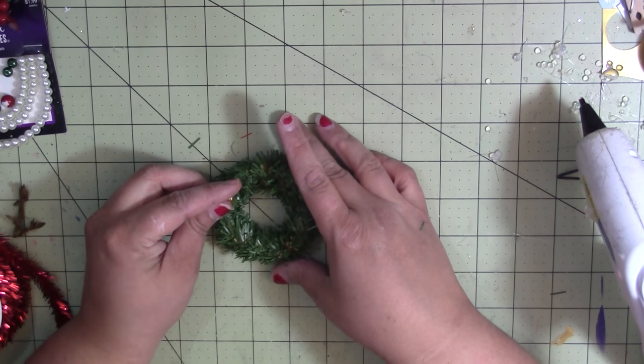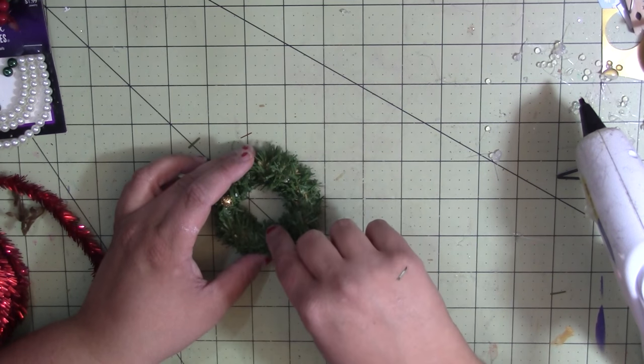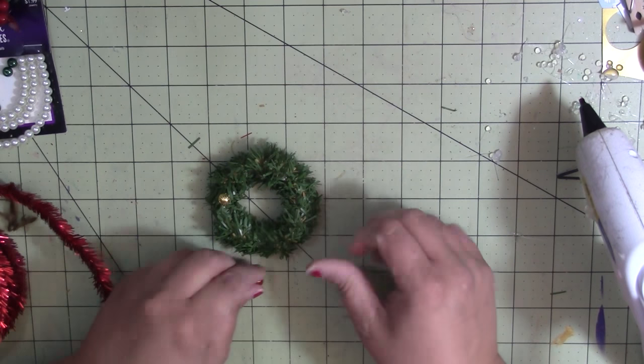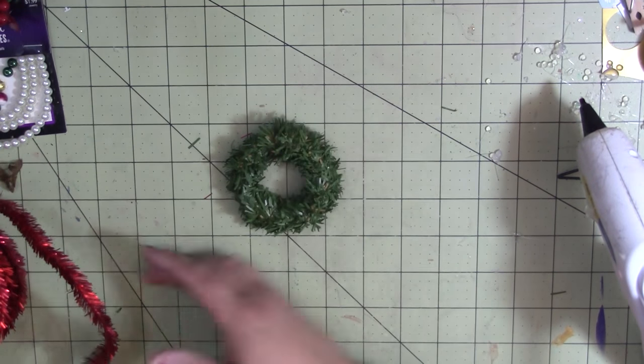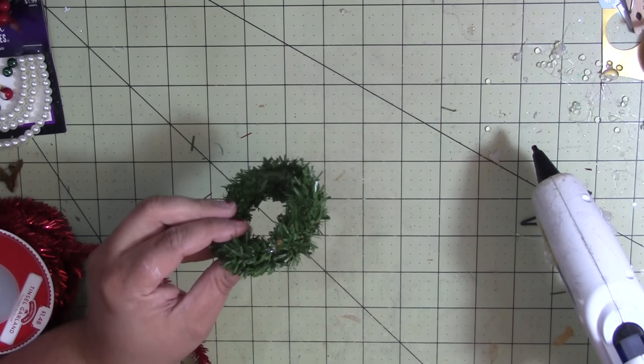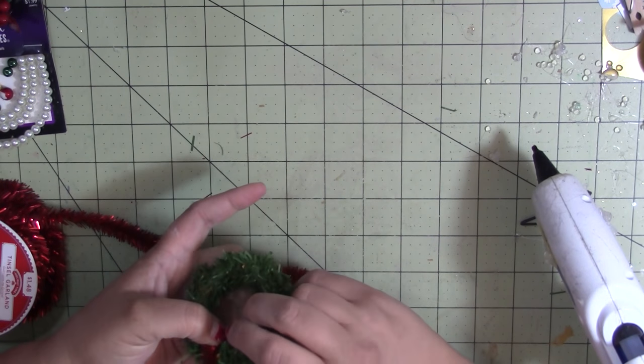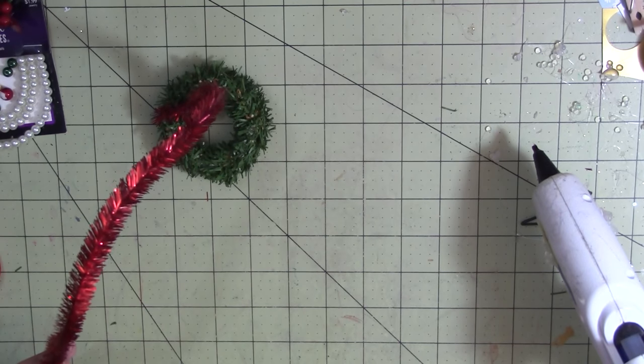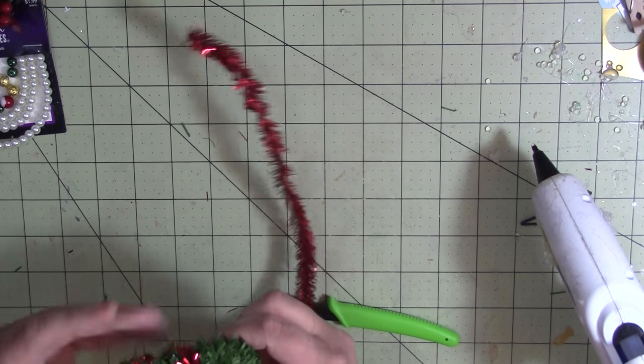Since I told you I was going to use the tinsel, I'm going to glue it down in the back. I'm just going to pick a length of this tinsel and cut it off. I probably have way more than I need because I only wrap it four or five times.